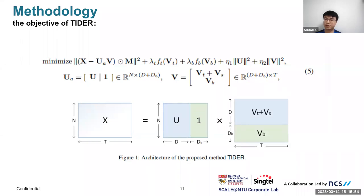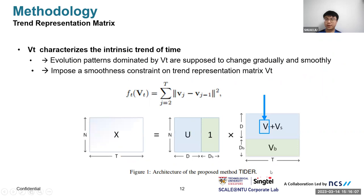Let's go to Vt, the trend representation matrix. It characterizes the intrinsic trend of time series. We find that evolution patterns dominated by the trend matrix are supposed to change gradually and smoothly. It will not change drastically during the time period. Thus, we impose a smoothness constraint on the trend matrix Vt. It is an L2 constraint between adjacent time periods.